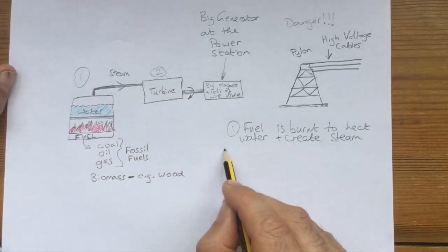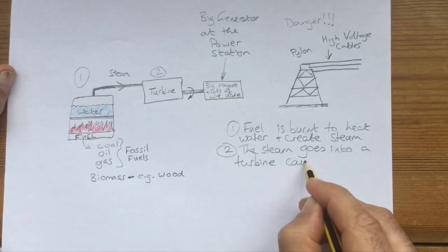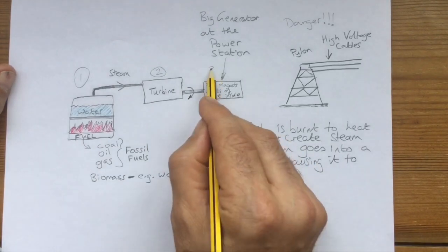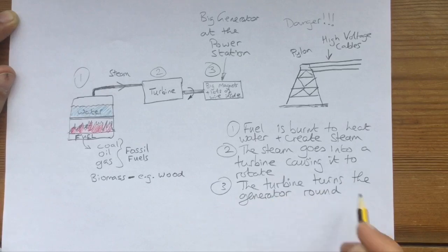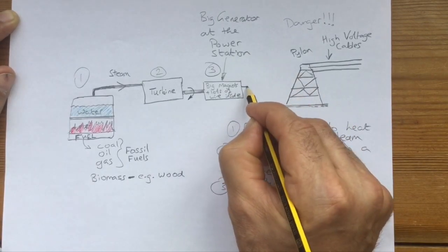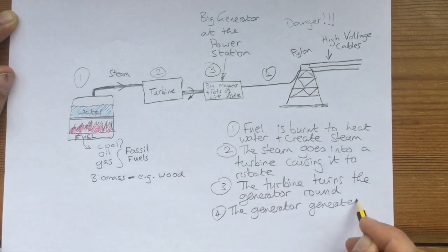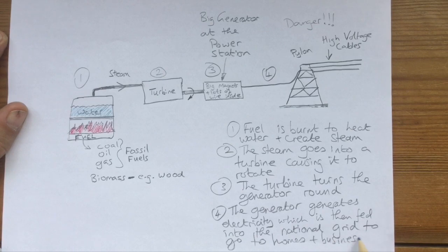This creates steam. Step two is that the steam causes the turbine to rotate. Step three is the turbine turns the generator. And step four is that the generator generates electricity when it rotates, and it's connected to the national grid to send the electricity around the country. Great, innit? You just burn some fossil fuels or some biomass, you release greenhouse and other toxic gases into the atmosphere, you've got electricity always when you need it.